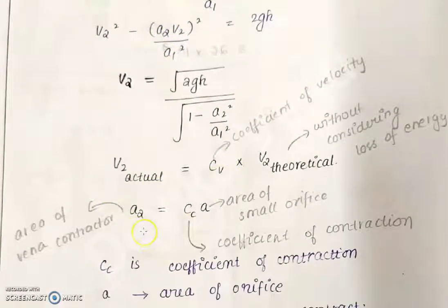The velocity v2 found from the equation is the theoretical velocity. In practice, the actual velocity is less than the theoretical velocity, so we multiply by the coefficient of velocity Cv. Therefore, v2_actual = Cv × v2_theoretical.